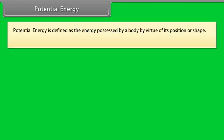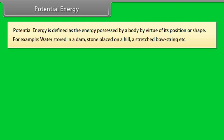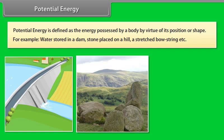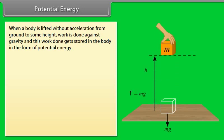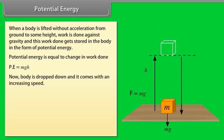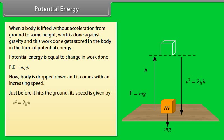Potential energy. Potential energy is defined as the energy possessed by a body by virtue of its position or shape. For example, water stored in a dam, stone placed on a hill, a stretched bow string, etc. When a body is lifted without acceleration from ground to some height, work is done against gravity, and this work done gets stored in the body in the form of potential energy. Potential energy equals change in work done. So potential energy = mgh. Now body is dropped down and it comes with an increasing speed. Just before it hits the ground, its speed is given by v² = 2gh. This equation can be written as ½mv² = mgh.